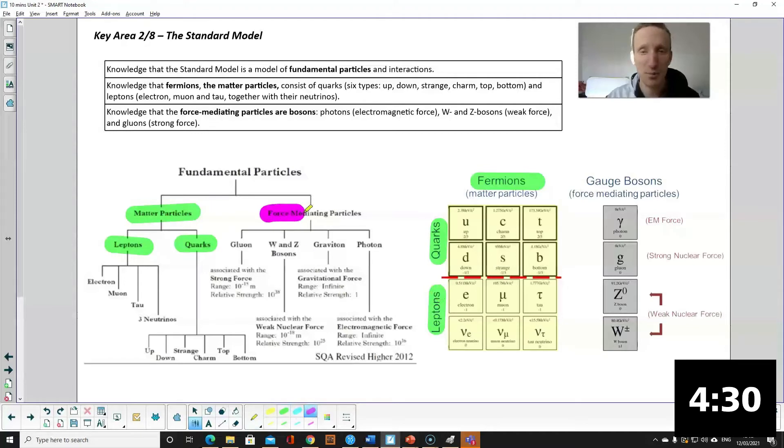The other half of the table the force mediating particles which we call the gauge bosons responsible for force. You have the gluon which is responsible for the strong nuclear force holding together the nucleus of an atom. You have the photon responsible for the EM forces and you have the W and Z bosons which are responsible for what we call the weak nuclear force. Like I say you do need to know the names of these different particles.